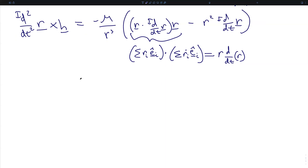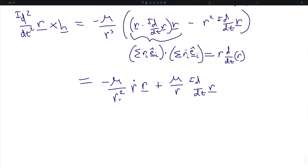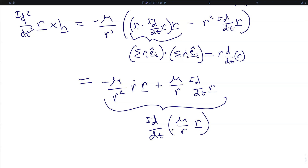So let's rewrite our equation one more time. The second derivative of the position vector crossed with the specific angular momentum equals the gravitational parameter over the separation distance squared times the scalar derivative of the separation distance in the r direction, plus the gravitational parameter over the separation distance times the vector derivative of the separation distance vector. This entire expression, by applying the product rule in reverse — please verify this — is equivalent to the derivative of mu over the norm of r times vector r, from which you will get these two terms.